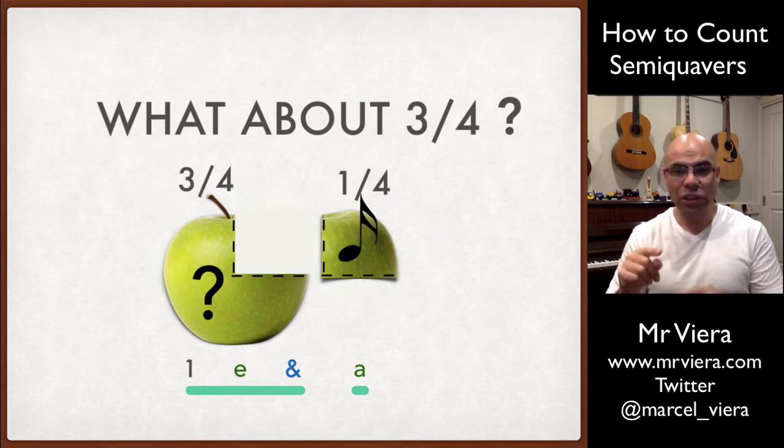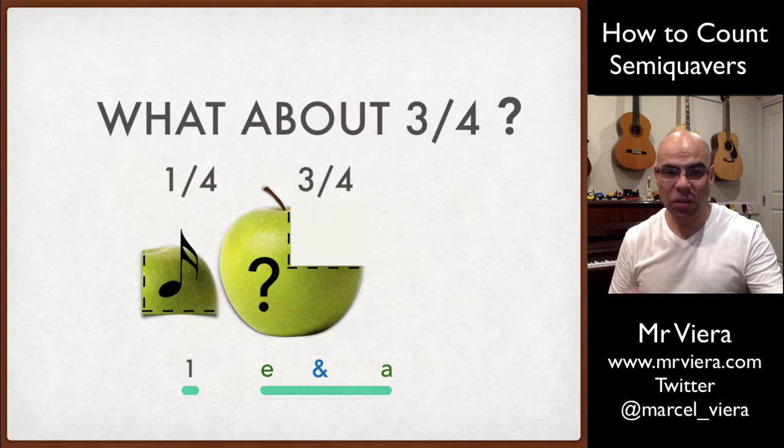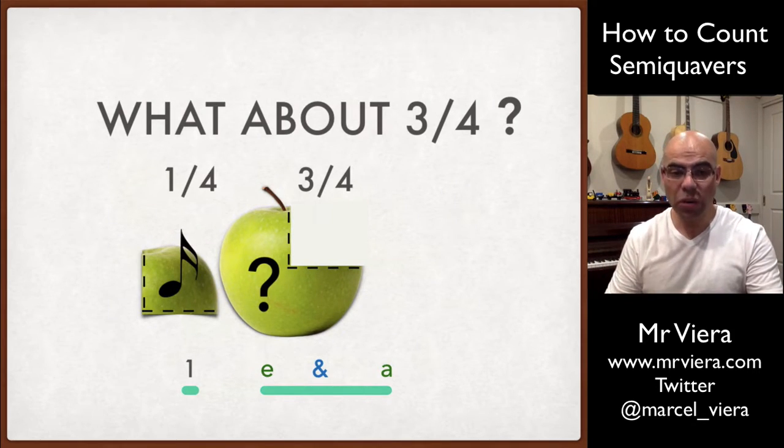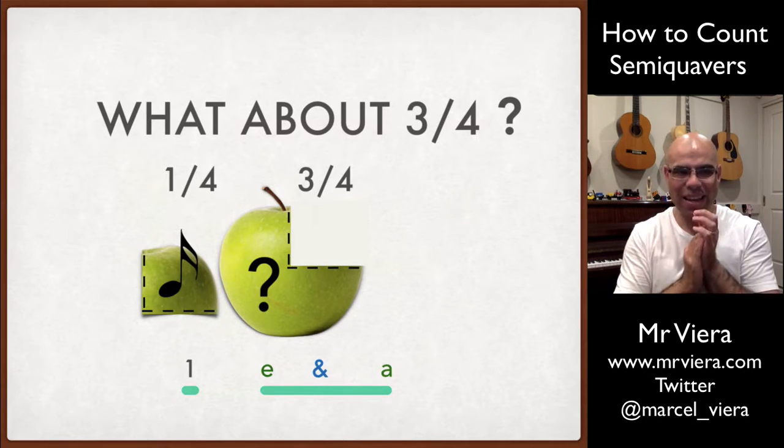Or we could swap the quarter and put it at the beginning and have this result where you've got the quarter first followed by the three quarters and it would go like this. One, E, and A. One, E, and A.